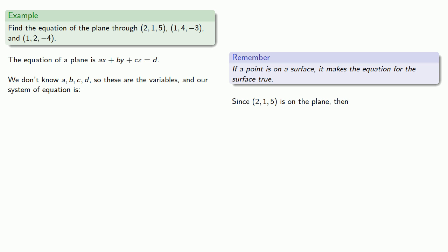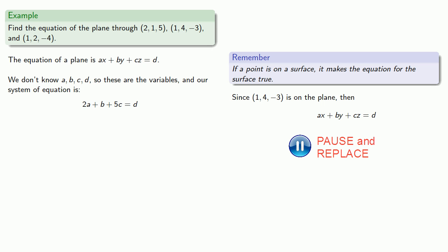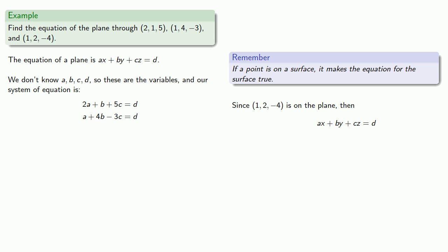So substituting in those values for x, y, and z. And so we know that 2a plus b plus 5c must equal d. Well, that worked well enough. Let's take a look at our second point. We know that 1, 4, negative 3 is on the plane. And so that gives us the equation. a plus 4b minus 3c equal to d. And again, 1, 2, negative 4 is on the plane. And this will give us an equation. And now we have a system of equations.